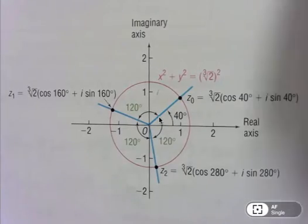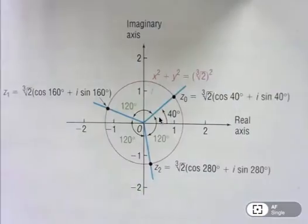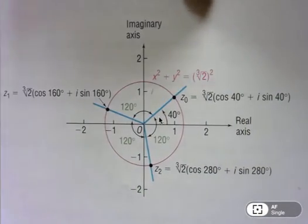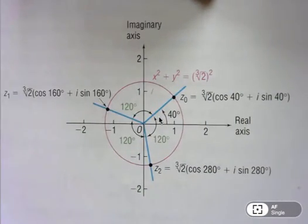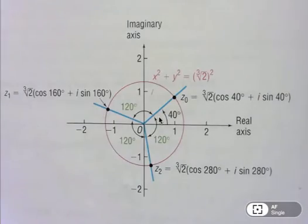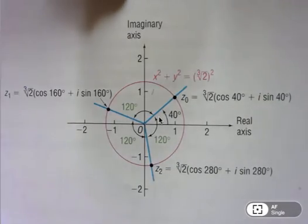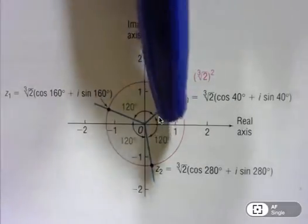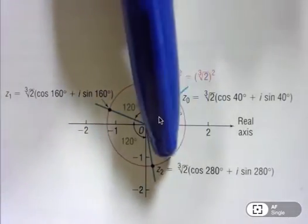So now we're back and I just want to show you what's going on here. So what we notice is that each of these three cube roots or complex roots here all had the same magnitude of the root, cube root of 2.